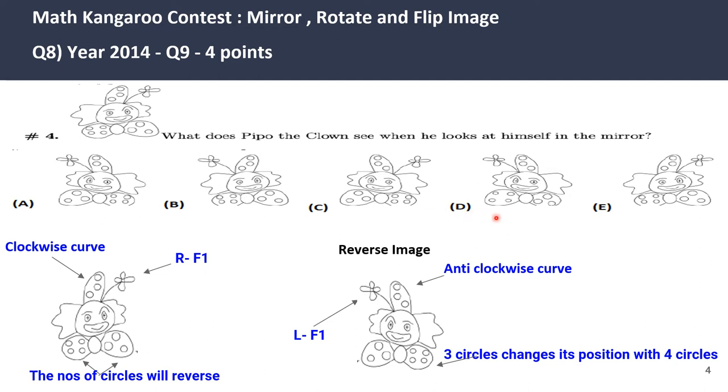Now option A and option D are quite similar. This is where the third condition applies. The three circle changes its position with the four circle. If you look at option A, the three circle is on the left hand side, which was right in the original image. However, in option D the three circle on the collar continues to be on the right hand side. So I'll eliminate option D and the right answer would be option A.